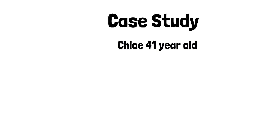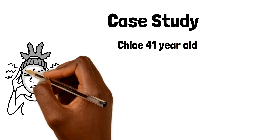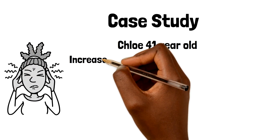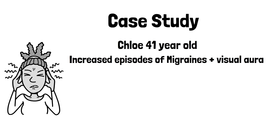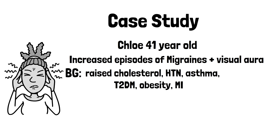Chloe is a 41-year-old female with a history of migraines whilst in her teens. She has experienced an increase in her episodes of migraines with visual aura over the last few months. She has an extensive cardiovascular history of raised cholesterol, hypertension, asthma, diabetes, and obesity, as well as a previous myocardial infarction a year ago. She's been taking regular over-the-counter co-codamol to manage her headaches, but this hasn't helped. Here is the rest of her medication list.